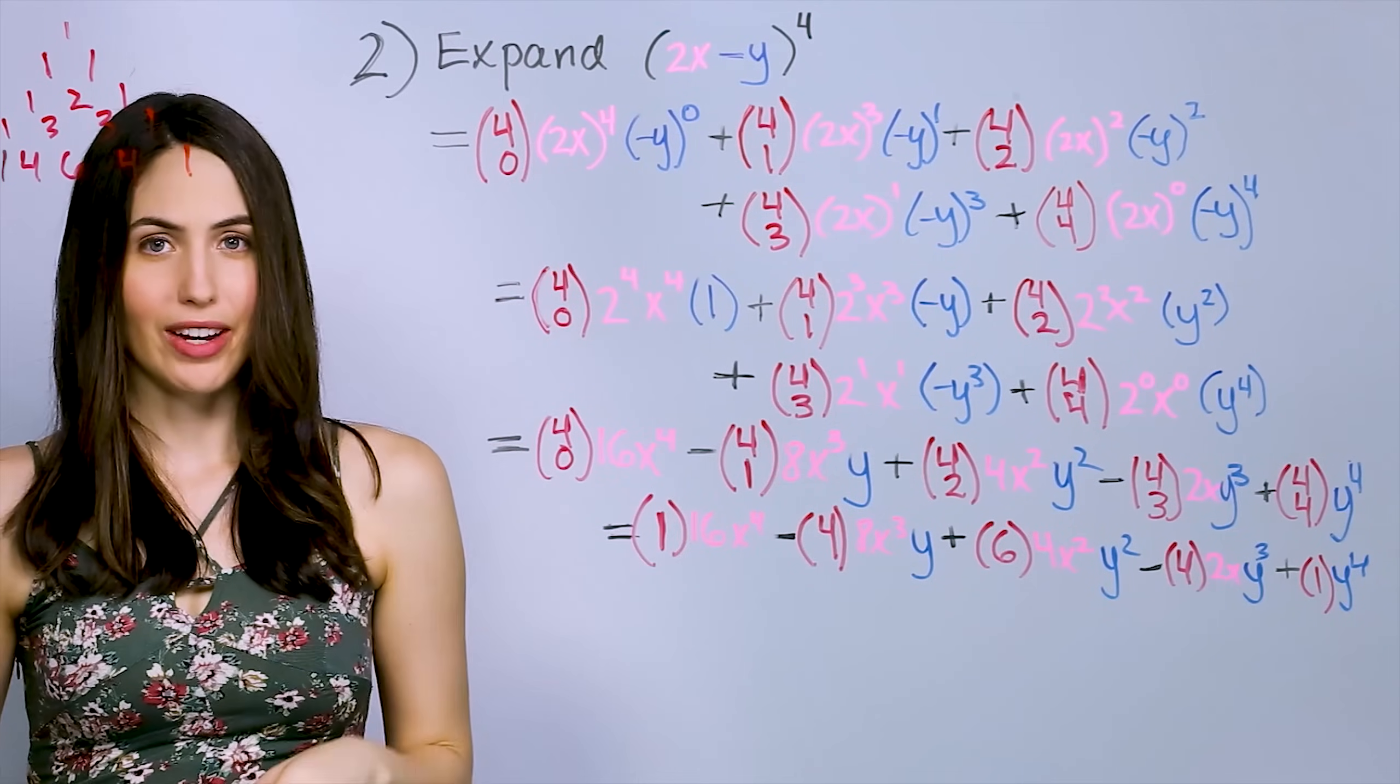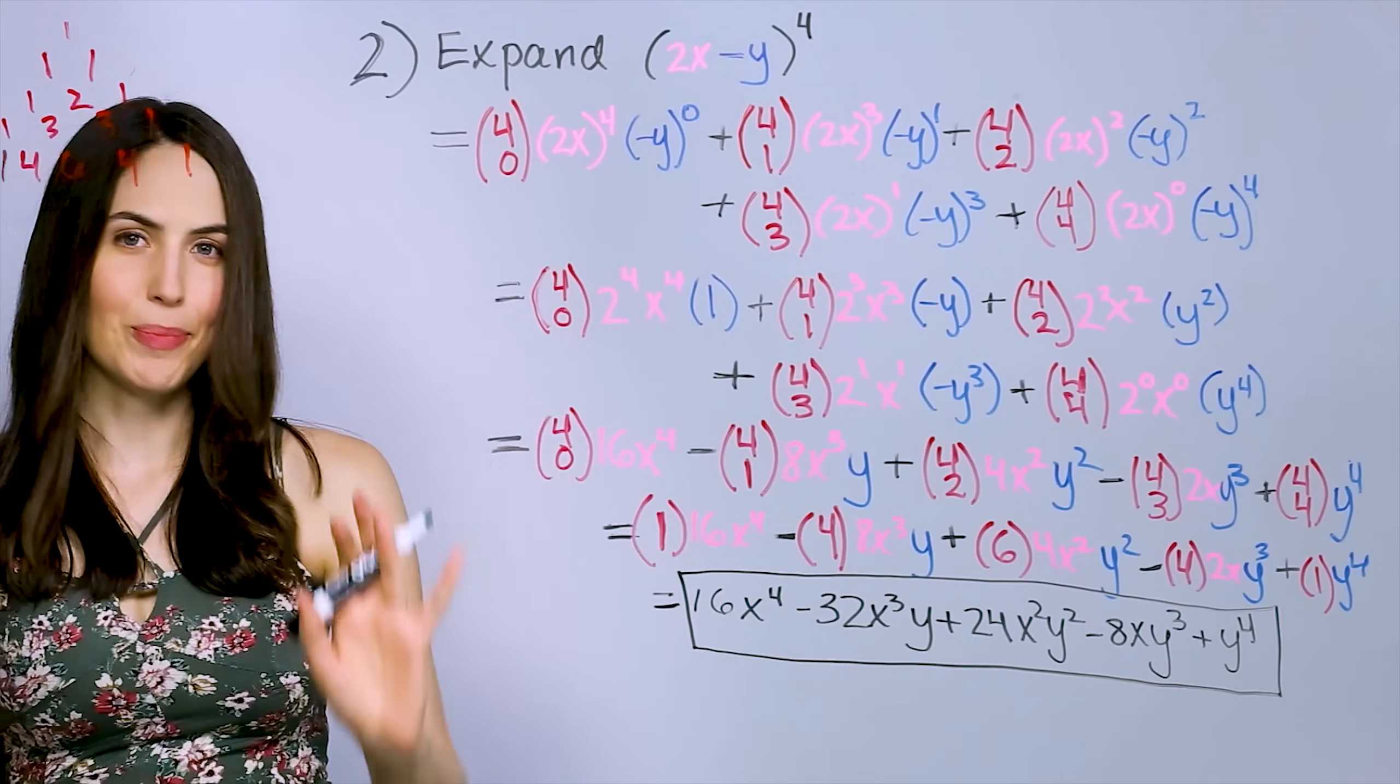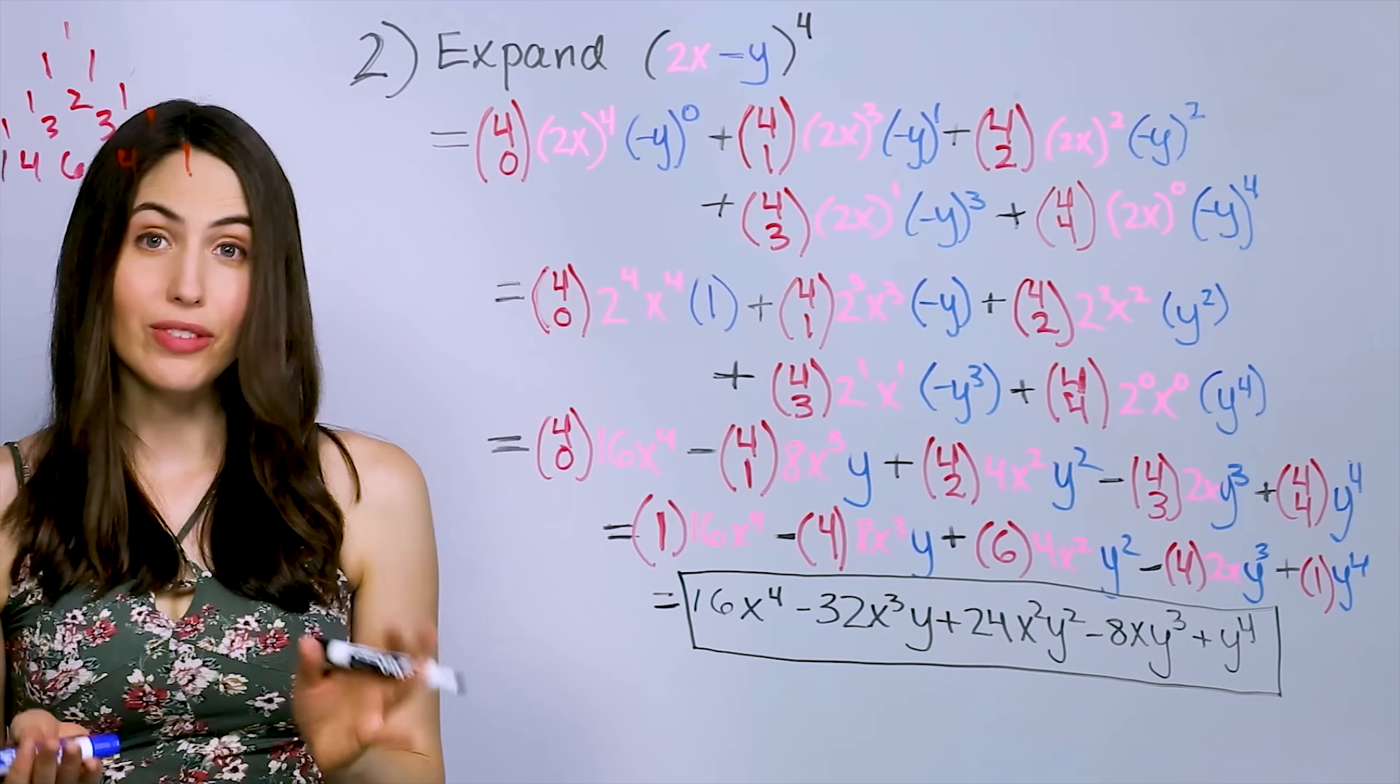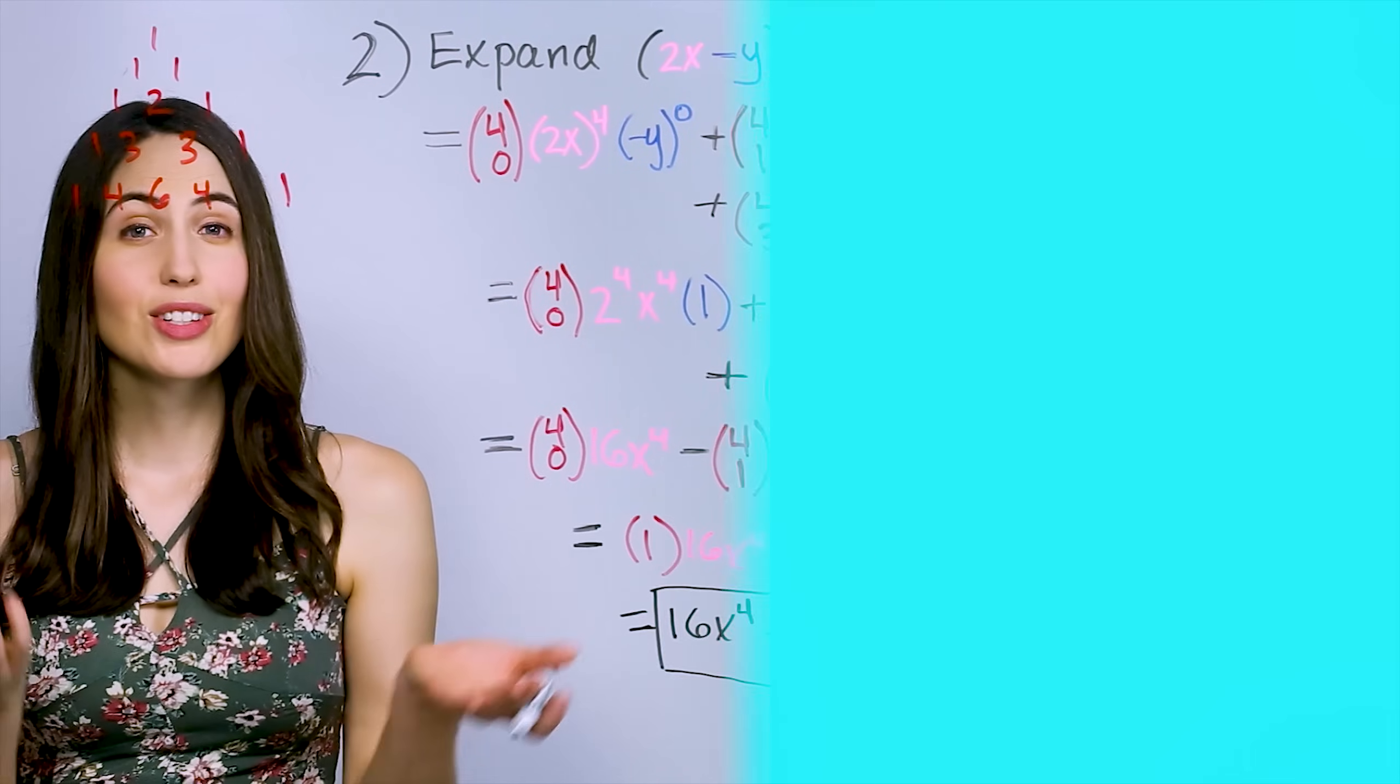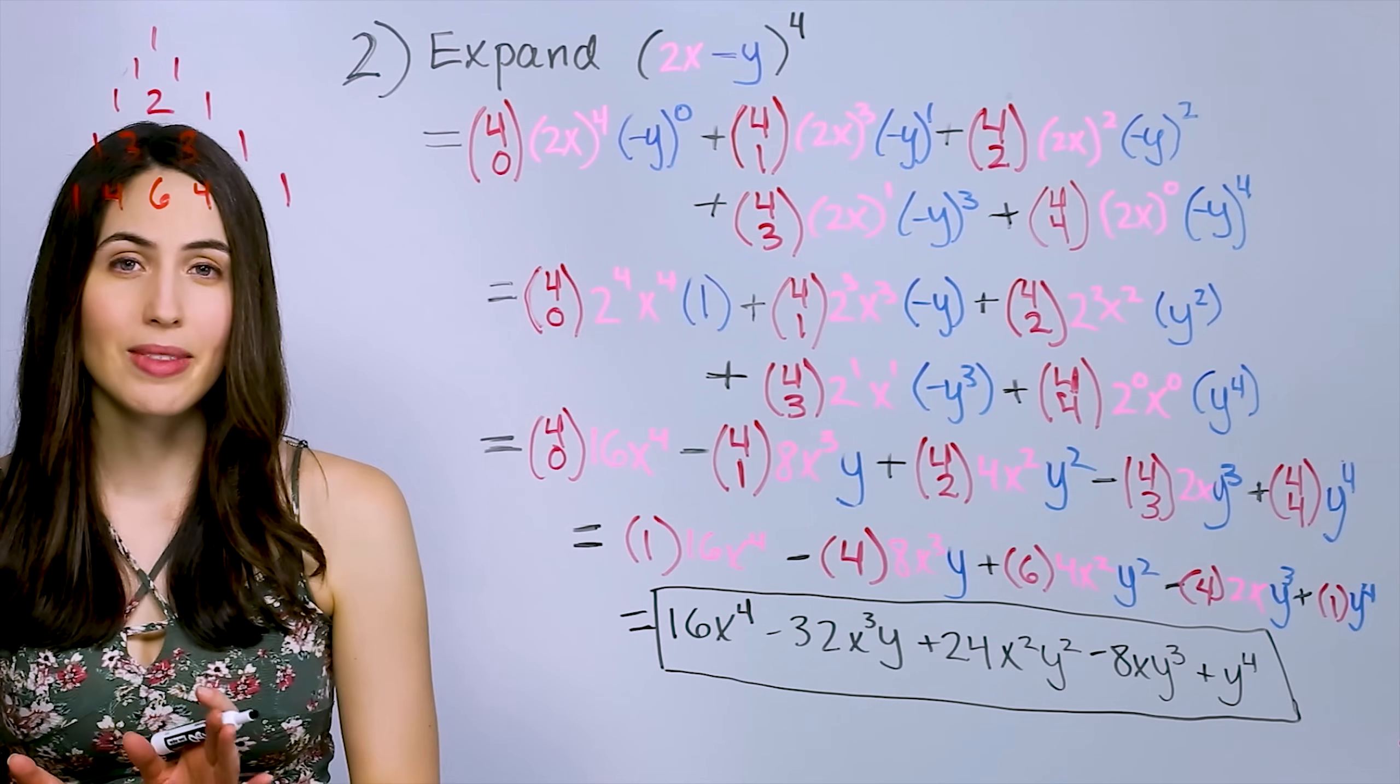Clean it up a little. Simplify a little more. And that's your expansion. Yeah, so the sign does keep switching, flipping between positive, negative, positive, negative. It alternates between the two. So that's it. That's how you do binomial expansions.